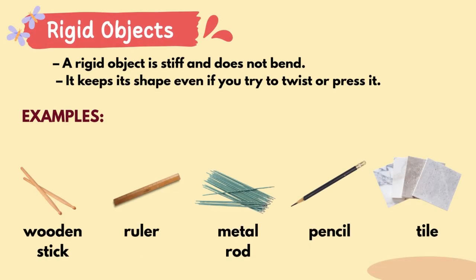Rigid Objects. A rigid object is stiff and does not bend. It keeps its shape even if you try to twist or press it. Examples: wooden stick, ruler, metal rod, pencil, and tile.